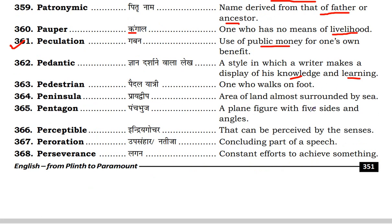Peninsular is the land area covered by water on three sides. Next is pentagon. Pentagon is a plane figure with five angles and sides.